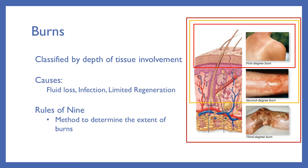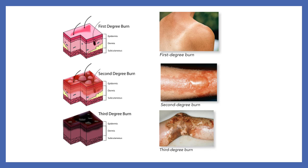Burns can result in fluid loss, infection, and limited skin regeneration. There are three levels: a first-degree burn affects only the epidermis — like a sunburn — and should not produce blisters. A second-degree burn extends into the dermis and typically causes blistering; these can be extensive and very painful. A third-degree burn is the most severe, going through the epidermis, dermis, and subcutaneous layer — in some cases reaching bone — with all dermal structures lost.